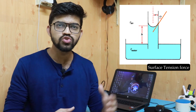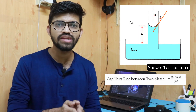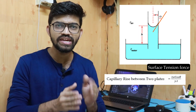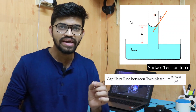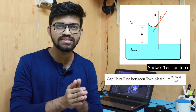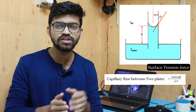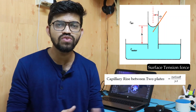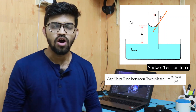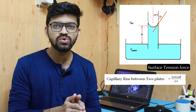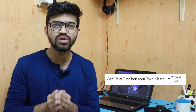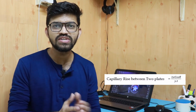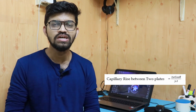We can also derive an equation for capillary rise between two adjacent parallel plates with a gap t. For this case, the equation becomes: h = 2σcosθ / (γ · t), where t is the gap between the two plates.